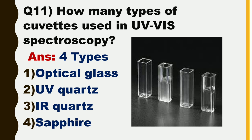Next question is: how many types of cuvettes are used in UV visible spectroscopy? The answer is, generally four types of cuvettes are used in UV visible spectroscopy. These are: optical glass, UV quartz, IR quartz, and sapphire.